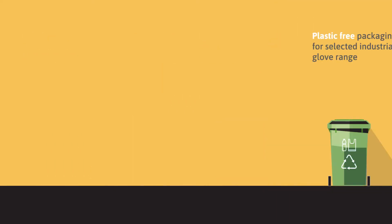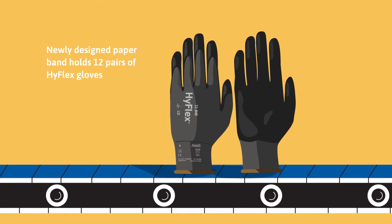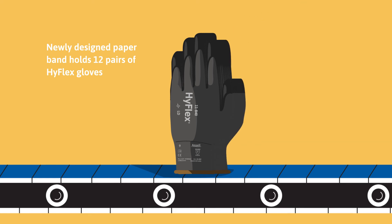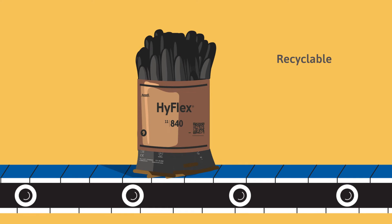We are introducing our first plastic-free packaging configuration, a newly designed paper band holding 12 pairs of our HyFlex gloves. The newly designed paper band is made from responsibly sourced paper and is recyclable.